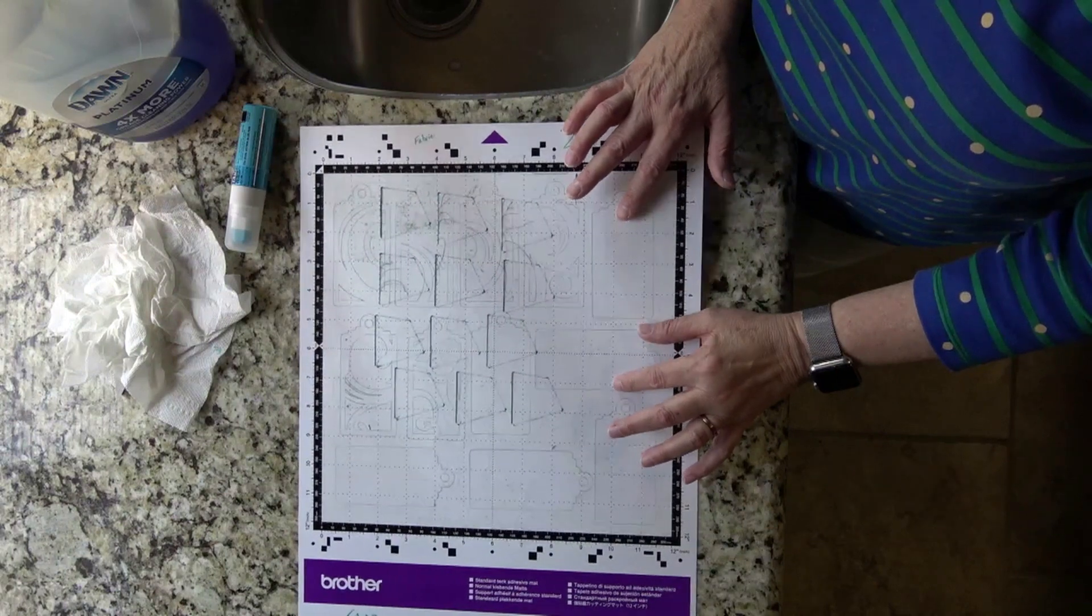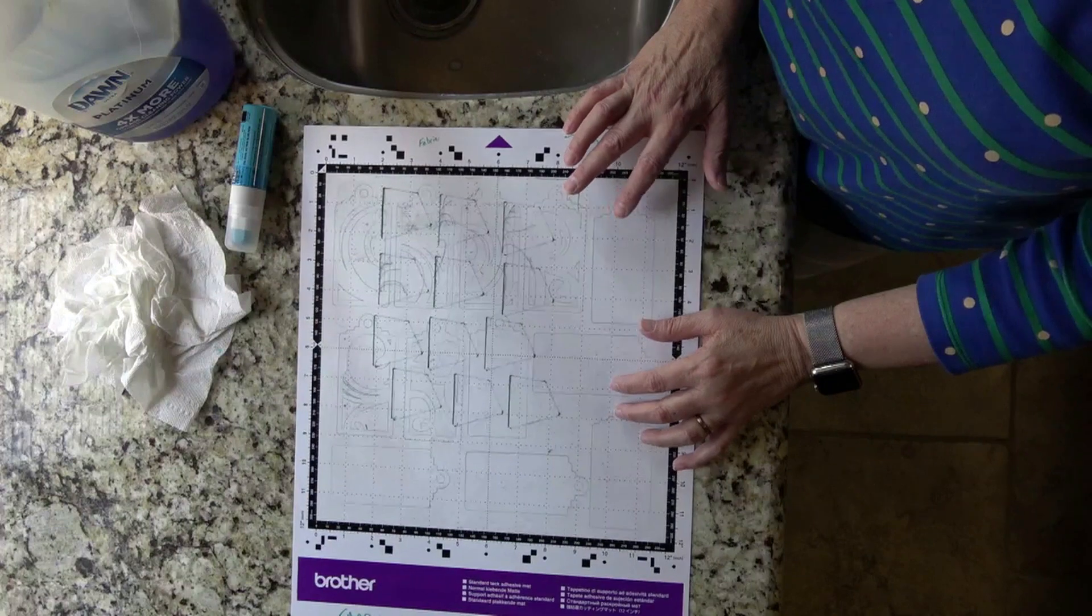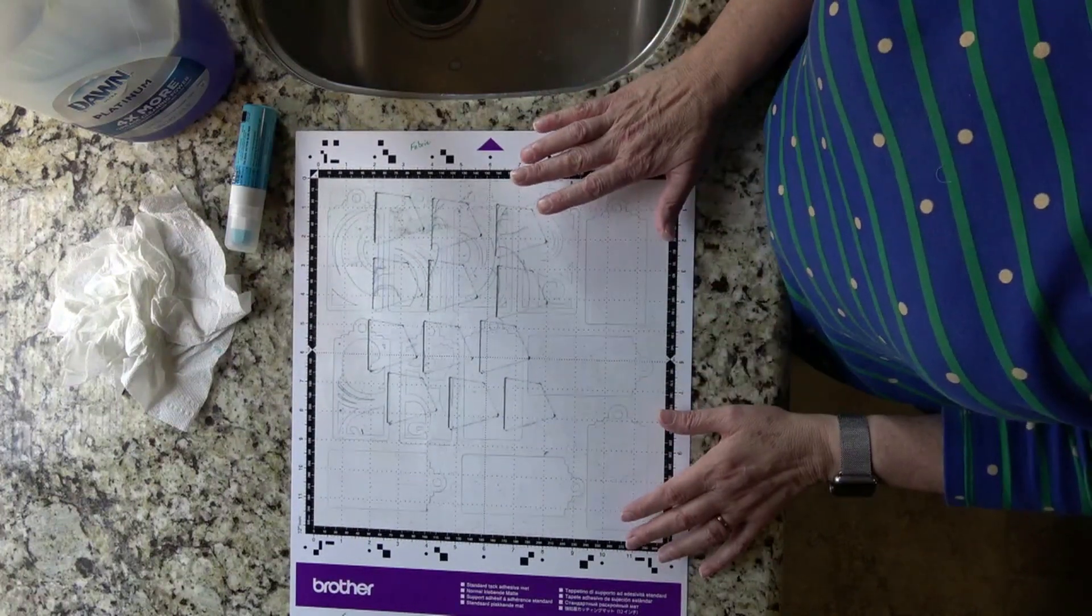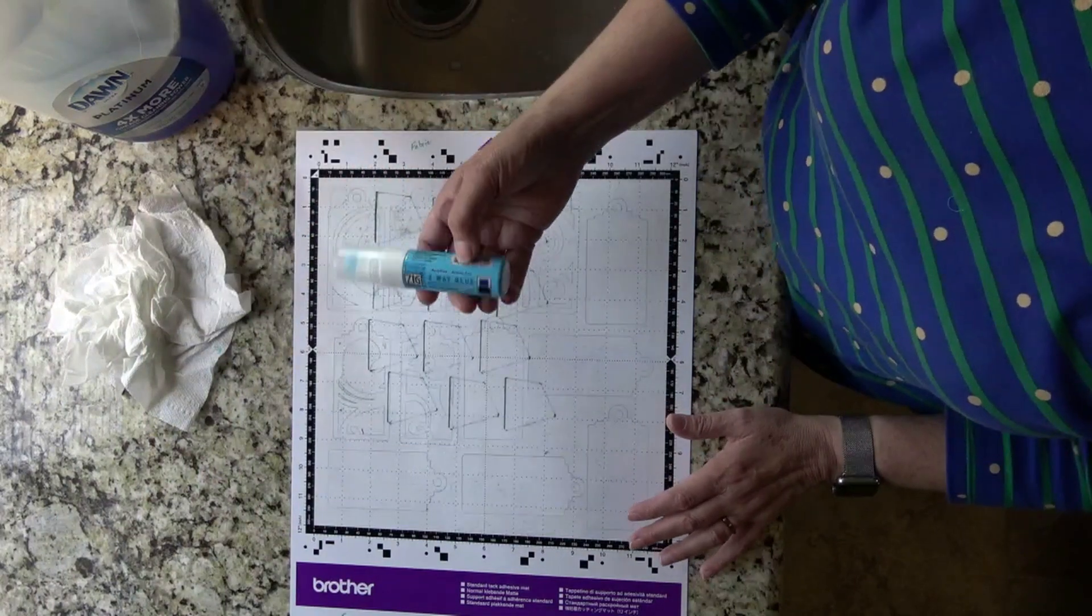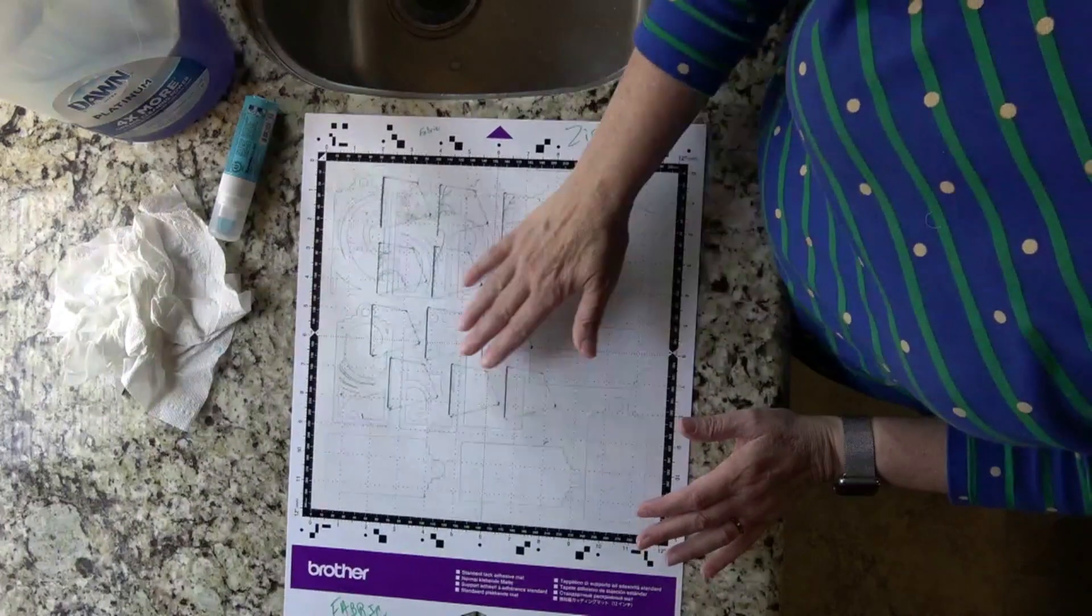I mentioned in one of my other videos that I did not buy the fabric mat for the Brother Scan and Cut. But I used one of my old mats, I cleaned it, and I coated it with the Zig two-way glue. And it's really sticky for fabric.